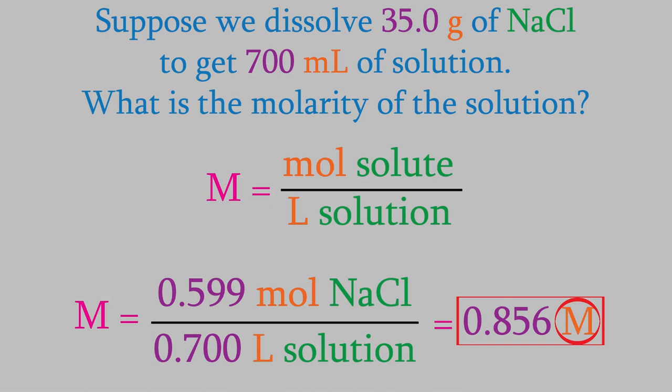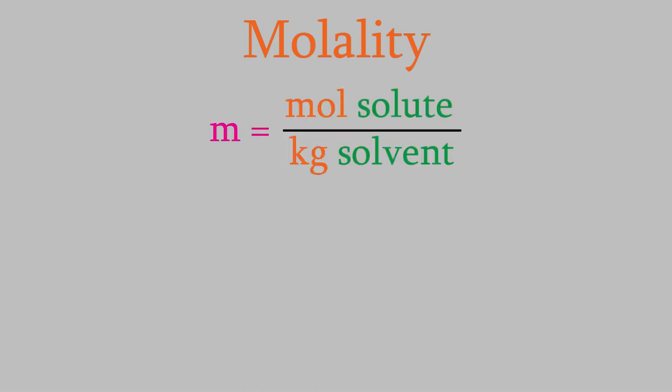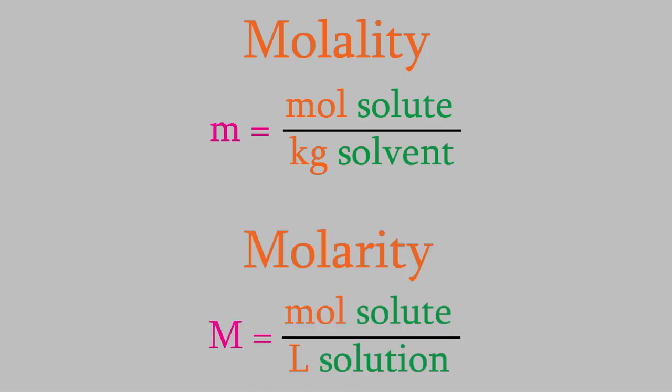Now let's look at some other concentration units. One of these is the molality. The molality is similar to the molarity, but with two important differences. The molality is the moles of solute over the kilograms of solvent. The numerator is the same as in the molarity, but the denominator is different in two ways: first, it's in kilograms, and second, it's kilograms of the solvent only, not the whole solution. I really want to stress that, because it's a common mistake. If you use the kilograms of solution, you will get an incorrect molality.